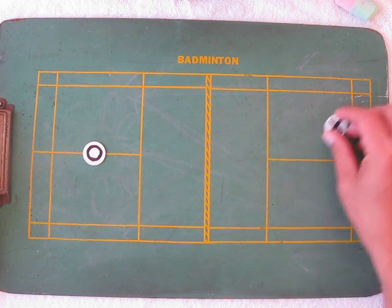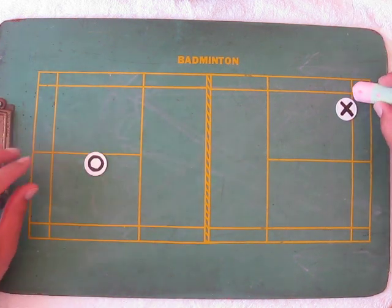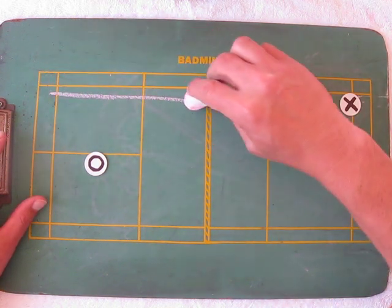Basic strategy for singles is to dominate the backcourt here. When you're here, what you want to do is you want to hit this triangle.